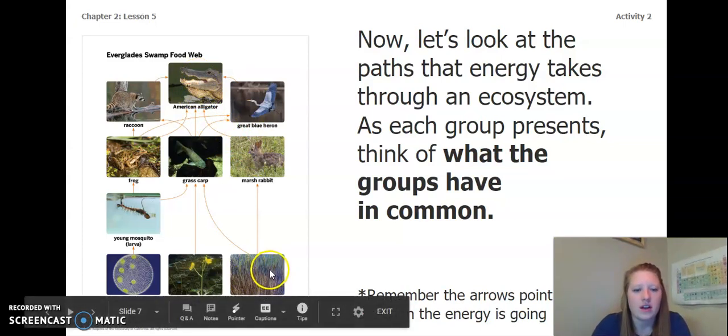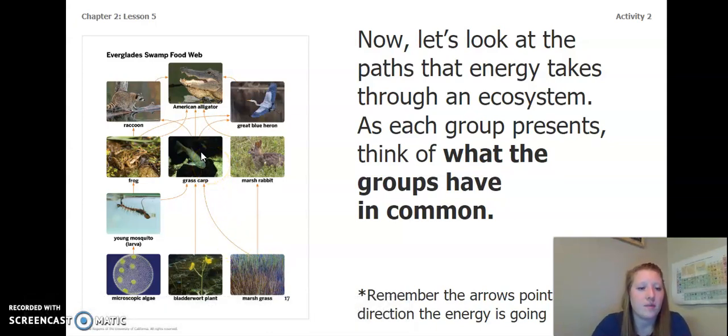Another path we can go is marsh grass. The energy goes into the grass carp. And then from there, the energy from the grass carp goes to the blue heron. And the energy from the blue heron goes to the American alligator.